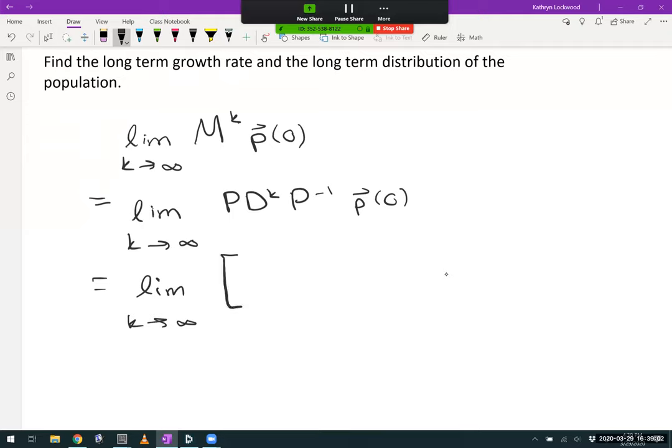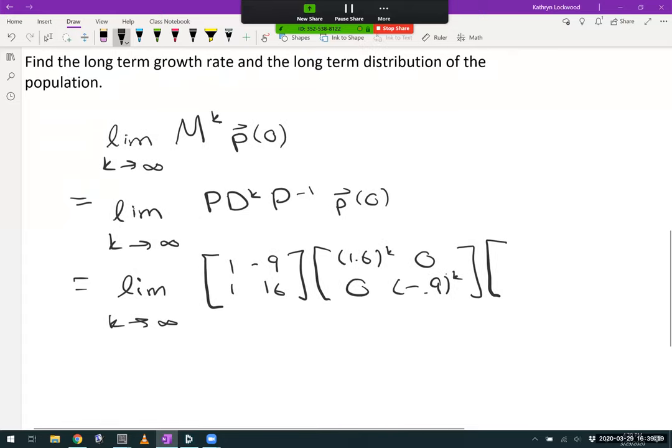For this particular example, our eigenvectors were [1, 1] and [-9, 16]. The eigenvalues were 1.6 and negative 0.9. Inverting the eigenvector matrix would give us [16, 9; -1, 1], with a factor of 1 over 25 out front, which I'll pull all the way to the front of the matrices here. And then we've got some initial population vector that we'll deal with at the end.